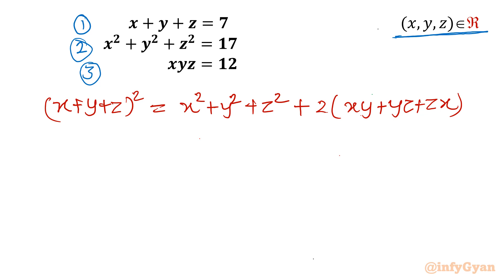Now I have to substitute the values from equation 1 and equation 2 on both sides. See, x plus y plus z is 7, so I will be writing 7 square. Here I can put equation 2 so the value will be 17 plus 2 times as it is xy plus yz plus zx.